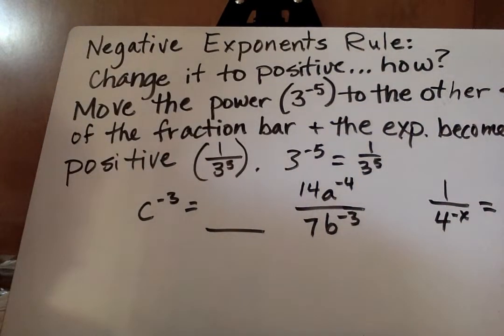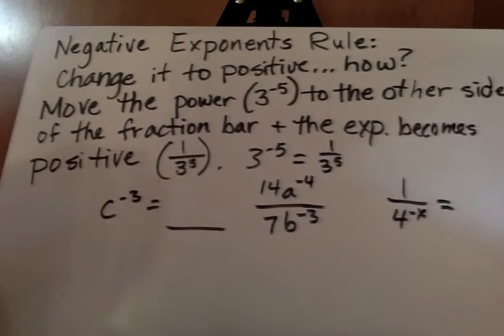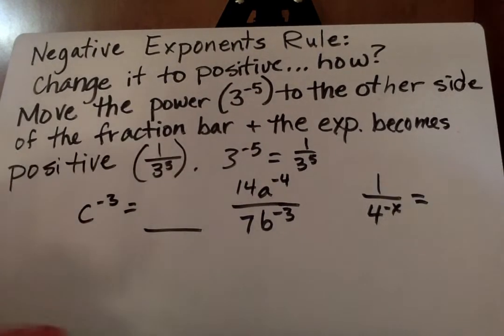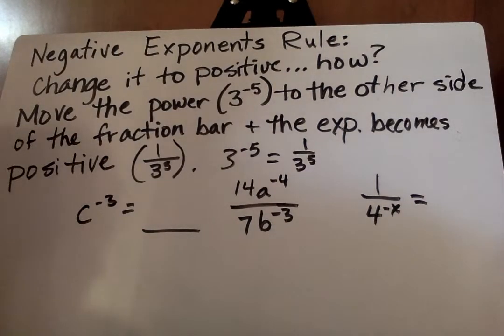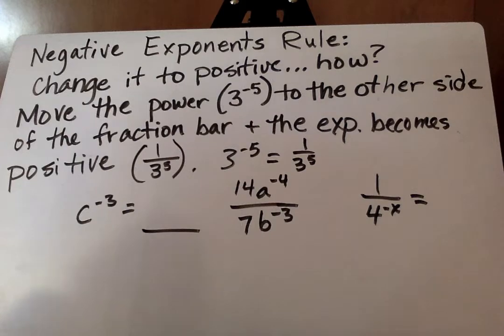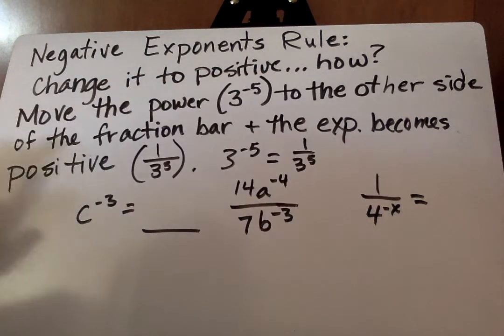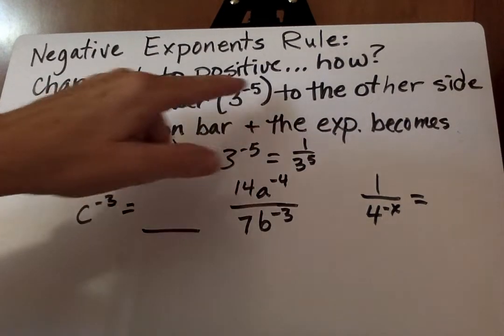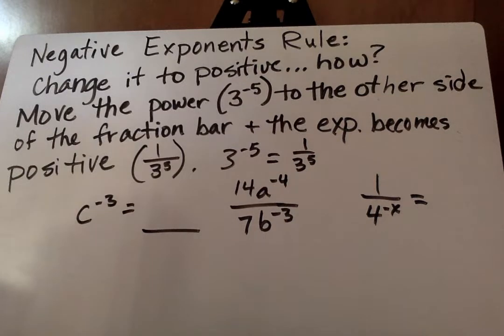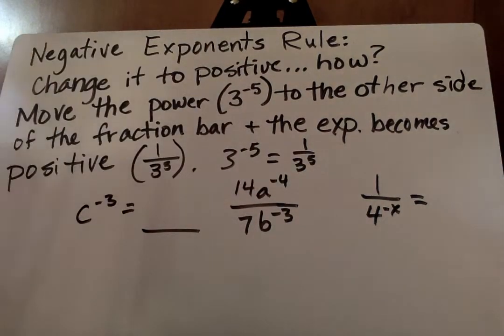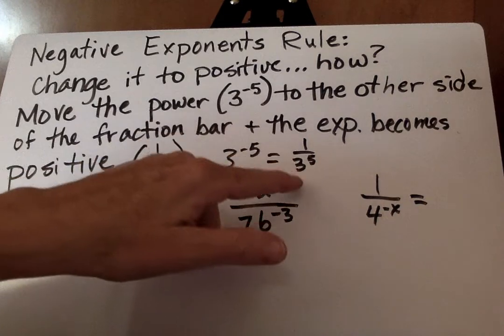On our negative exponents rule, we change it to a positive. How? You move the power, see this is the power, negative 5, or the exponent, to the other side of the fraction bar, and the exponent becomes positive. I sometimes say that negative exponents are like naughty children. What do we do with naughty children? We shove them in the basement where they become positive. So 3 to the negative 5 equals 1 over 3 to the positive 5.